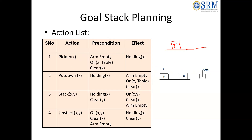For put-down(x), the precondition is that the arm is holding x. The effect is that x is now placed on the table — on(x, table) — and the arm becomes empty. Also, clear(x) is now true because nothing is placed above x on the table.